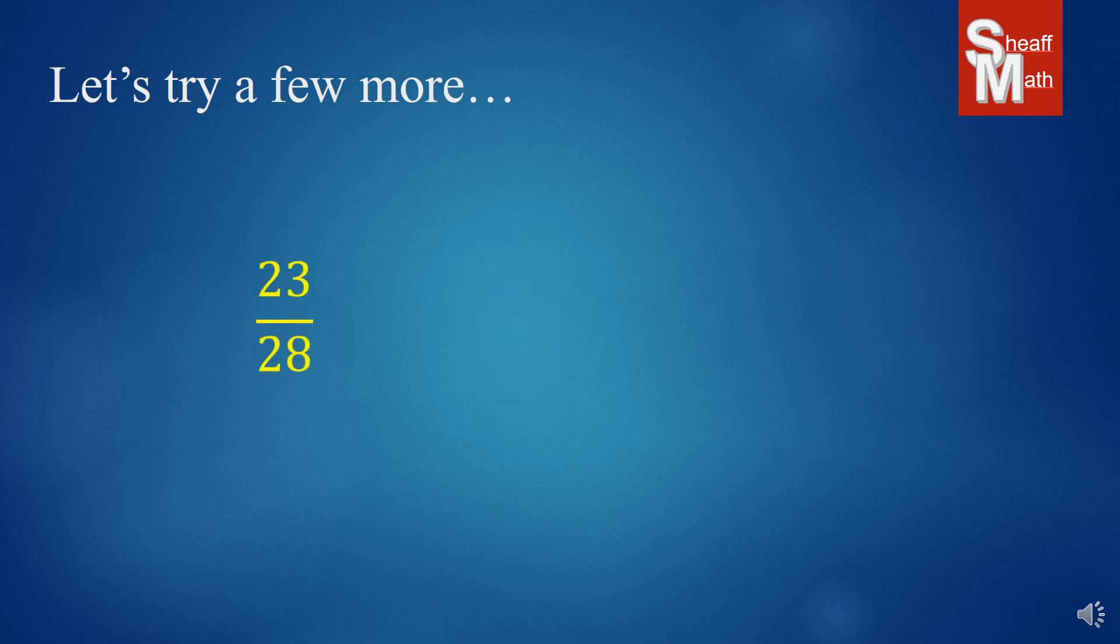All right, what about 23 over 28? Sometimes you'll get this type of problem. And it's kind of a trick question. 23 is actually a prime number. And so it cannot be divided by anything but one and itself. And so it's actually simplified right off the bat. And so there's nothing more that you can do to that.